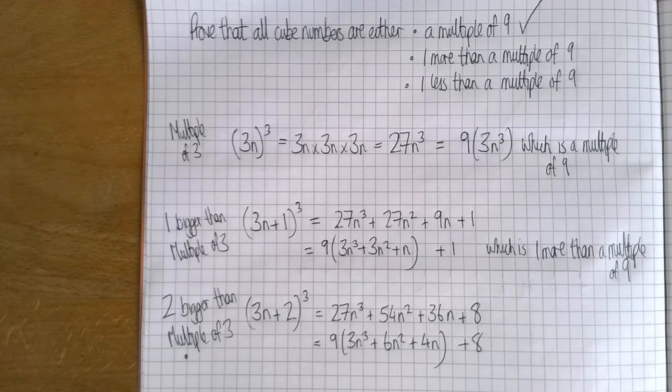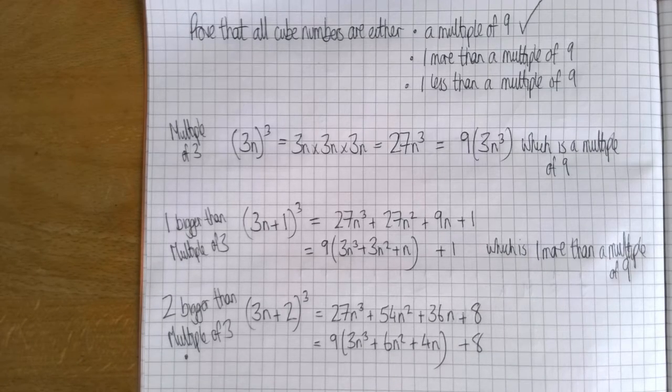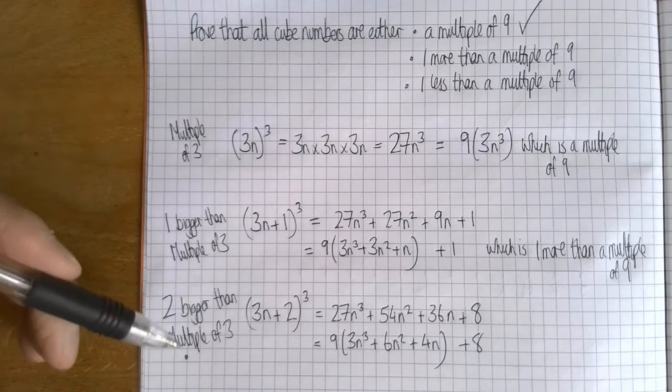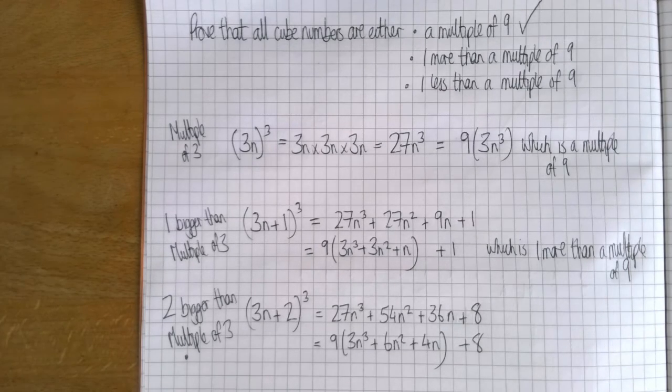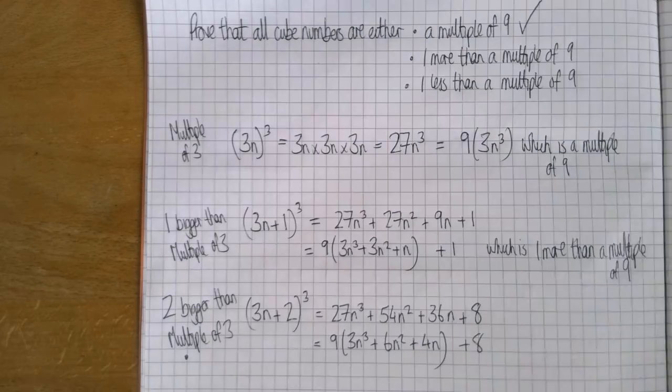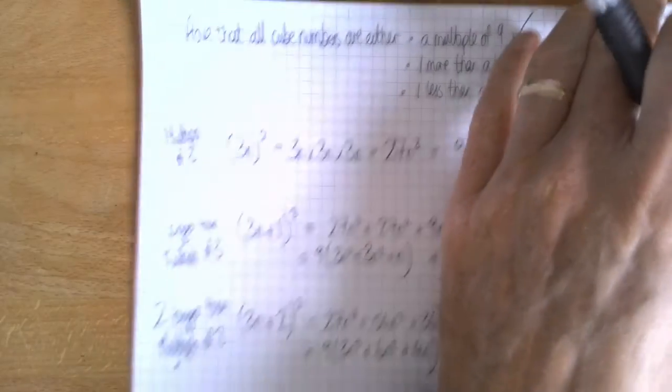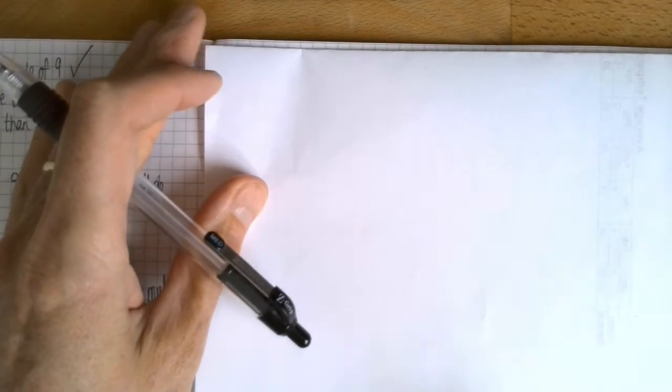And that's the hardest proof by exhaustion question I could find. Three conditions, which was what got me on the multiple of three thinking. Two conditions, well that's probably odd or even. And then the other sort you get are where you've just got a limited list of numbers.